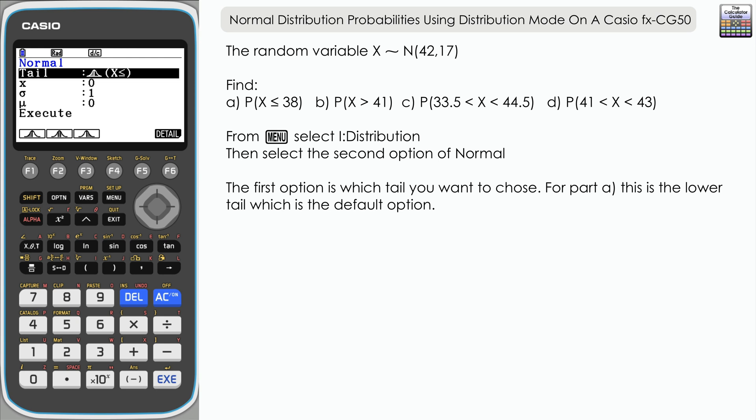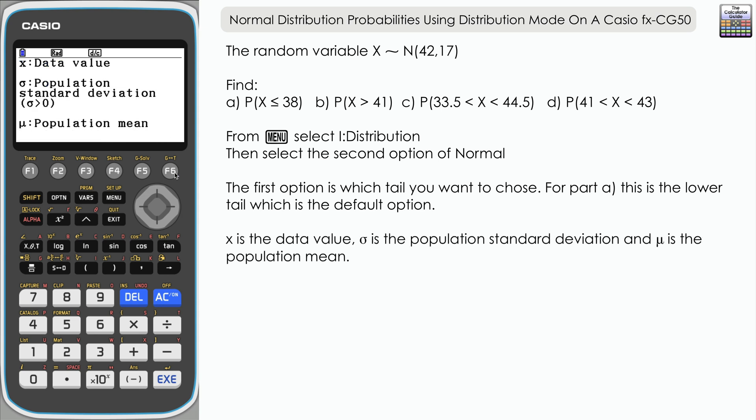We also need to input X, sigma, and mu. Let's press F6 to get details on that. X is the data value, so in part A that is 38. Sigma is the population standard deviation, and mu is the population mean. Let's exit back and input the relevant values for our question.